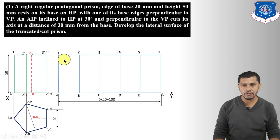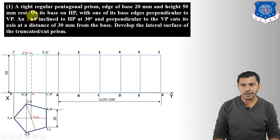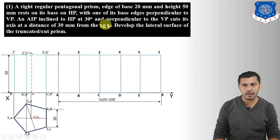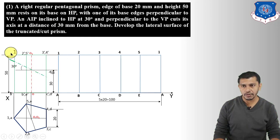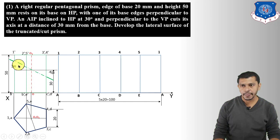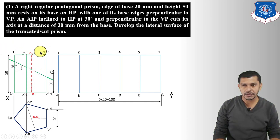Now we take the cutting plane. The AIP is inclined to HP at 30° and perpendicular to VP, cutting the axis at 30 mm from the base. Measure 30 mm from the base along the axis and draw the cutting plane line inclined at 30° passing through that intersection point. After showing the cutting plane, remove the upper part; draw the dark outlines of the lower part that remains.